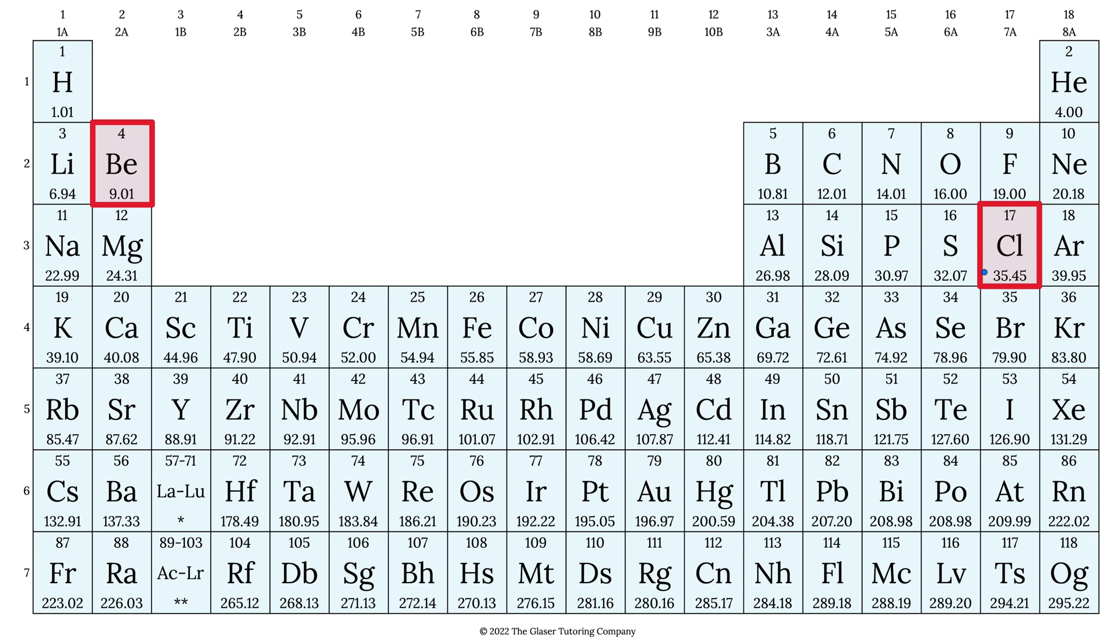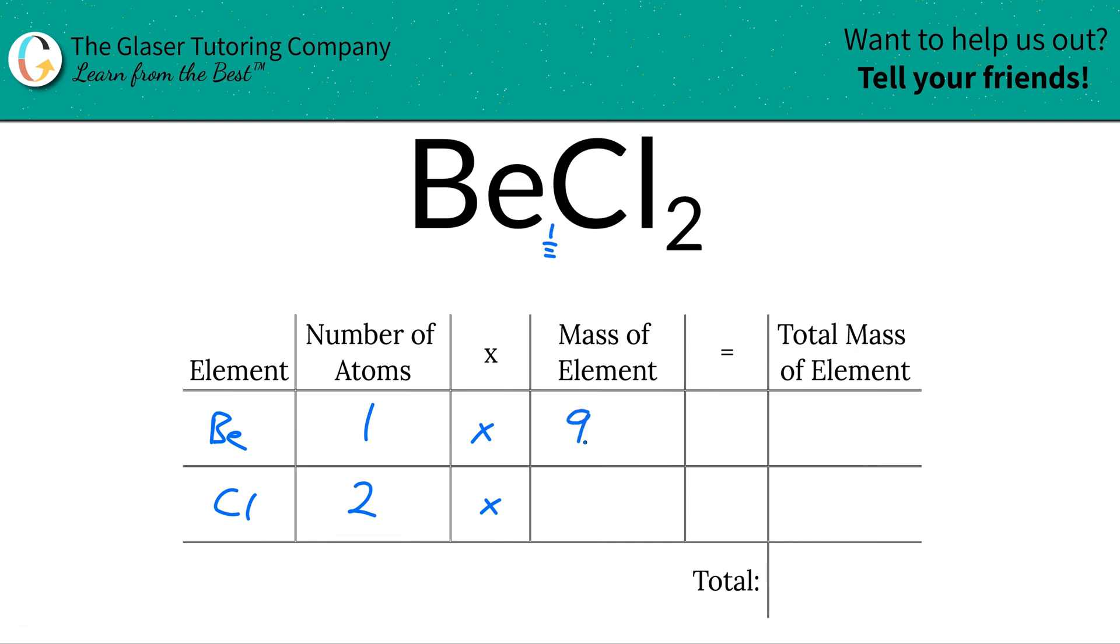Those units there for those numbers would be gram per mole if you're calculating a molar mass or AMU if you're calculating molecular mass. So this is going to be 9.01 and then the molar mass of chlorine is about 35.45.